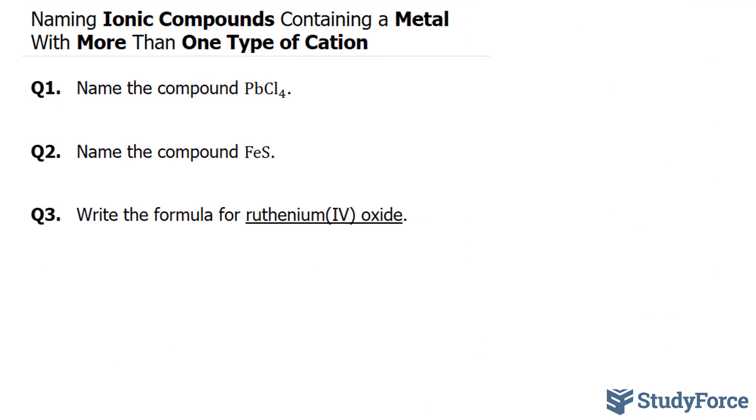First, we have to look at the formula. The formula is PbCl4. Given that Cl has a charge of 1 negative, when putting together this formula, that charge should be right here. And the charge of Pb has to be 4 because if it were 2, this would be 2.